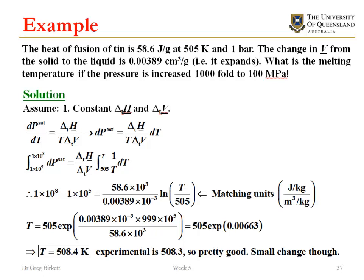So if we look at applying this to something, if we have a look at the case of tin, the heat of fusion of tin is 58.6 joules per gram at 505 Kelvin and at one bar. I also know that as it goes from a solid to a liquid that the volume change is 0.00389 centimeters cubed per gram. So what is the melting temperature if the pressure is increased a thousand times from one bar to a hundred megapascals?